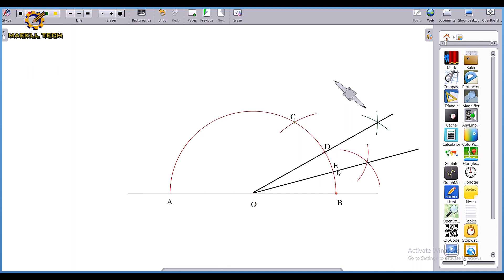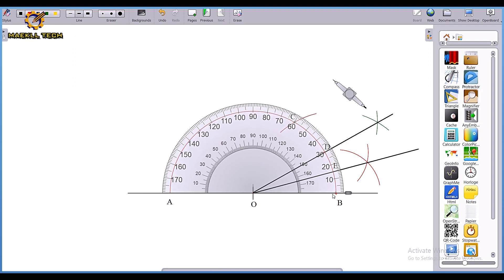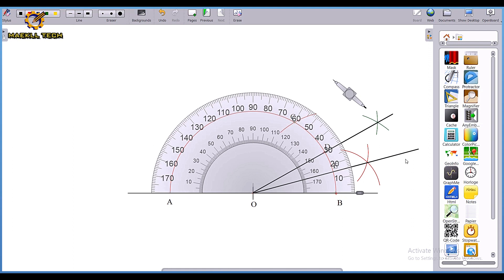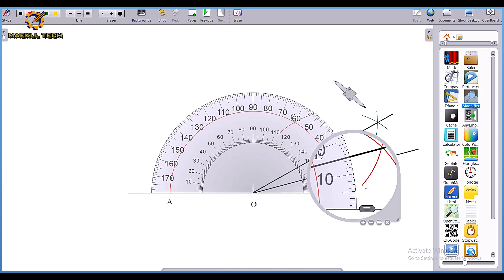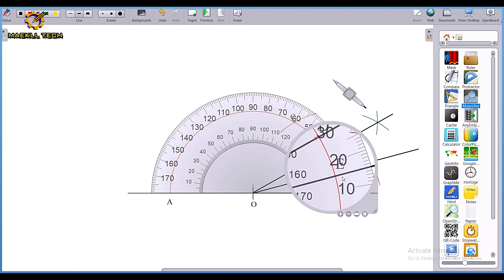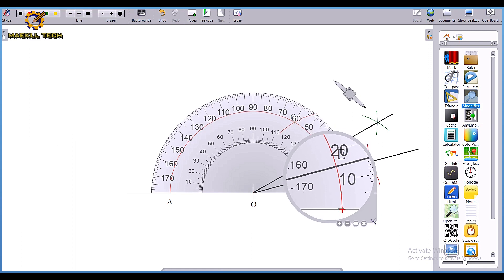To confirm that, this is my protractor. With my protractor standing right here, let me just enlarge that so you can see for yourself. With my magnifier, you can see that line E is standing in between 10 and 20, which signifies 15 degrees.